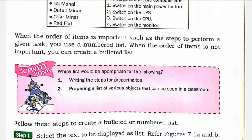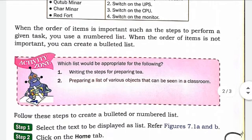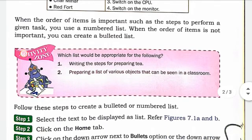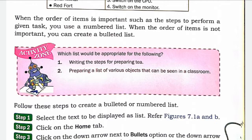Activity में देखा गया है कि किस list का use appropriate होगा। पहला example है: writing the steps for preparing tea — चाय बनाने के steps proper order में होंगे, तो उसमें numbering लगानी पड़ेगी। दूसरा example है: prepare a list of various objects seen in the classroom — classroom में जो भी objects दिखते हैं उनकी list बनाने के लिए bullet list use करेंगे। इस तरह किसी भी text के सामने bullet या number लगा सकते हैं।